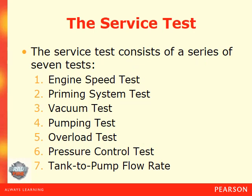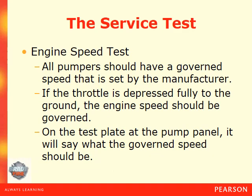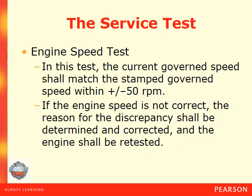The service test consists of a series of seven tests: engine speed test, priming system test, vacuum test, pumping test, overload test, pressure control test, and tank-to-pump flow rate. For the engine speed test, all pumpers should have a governed speed set by the manufacturer. The test plate at the pump panel will indicate what the governed speed should be. The current governed speed shall match the stamped governed speed within plus or minus 50 RPM. If the engine speed is not correct, the reason for the discrepancy shall be determined and corrected, and the engine shall be retested.